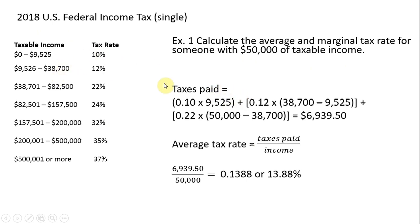Using this table, the first nine thousand five hundred and twenty-five dollars is taxed at ten percent — that's what this first calculation shows. Our fifty thousand dollars also brings us into the second bracket, where income is taxed at twelve percent. So it's twelve percent, or 0.12, times thirty-eight thousand seven hundred, but then we subtract nine thousand five twenty-five because we already paid taxes on that first portion at ten percent.